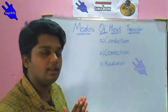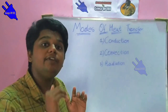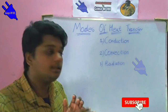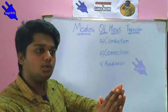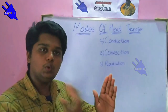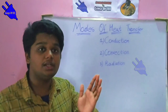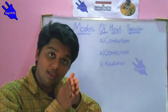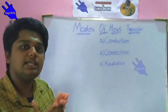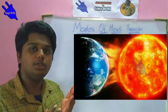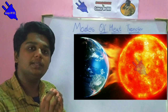The third type is radiation. In radiation, heat is transferred across a gap — there is no medium required. The heat is transferred through that gap and reaches the ground or a surface. This is how radiation works.